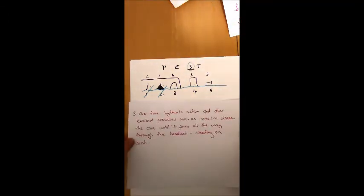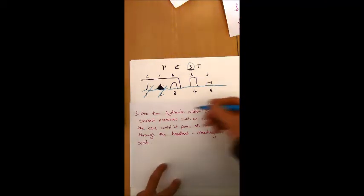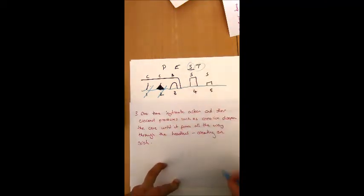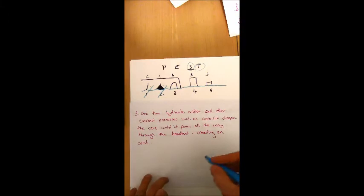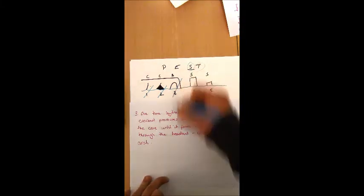The third step is that over time—importantly getting that aspect in there about referring to time—the hydraulic action and other erosional processes such as corrosion, which is where fragments of rock are hurled against the shoreline by the force of the waves, these processes will deepen the cave until it forms all the way through the headland. That may be in the case that two caves forming from either side of the headland meet, or one cave may just experience such high rates of erosion that it develops all the way through. This will then leave an arch. So again, we can now tick off that part there.